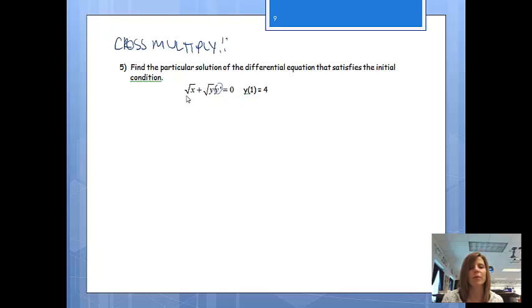But right now, this equation is not set up to cross multiply, so that's what I'm going to be doing first. So I'm going to have the square root of x plus the square root of y, and y prime will turn into dy dx equals 0. Again, still this problem does not look like one we could cross multiply on, because we don't have a fraction set equal to a fraction. So I'm going to subtract the square root of x so that we will. So now I'm going to have the square root of y dy dx is equal to negative square root x.